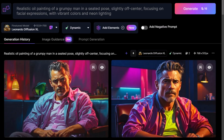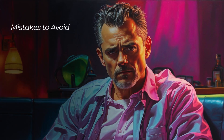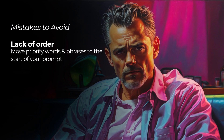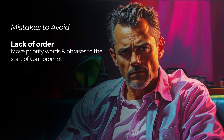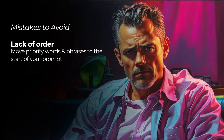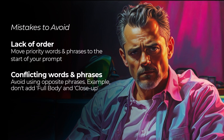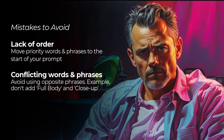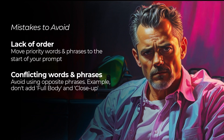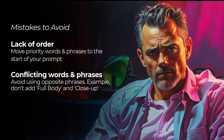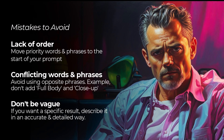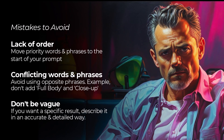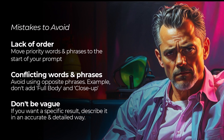Some common mistakes to avoid: make sure you don't have a lack of order — put the most prioritized words towards the start of your prompt, as words at the start are generally prioritized more than words at the end. Also make sure you don't have too many conflicting phrases. For example, don't put "full body" and "close up" together because those two are completely different things and can produce undesired results. Also don't be too vague — if you're looking for a very specific result, be as accurate and detailed in your description as you can be.